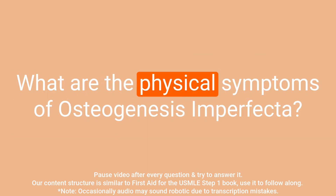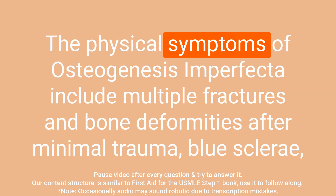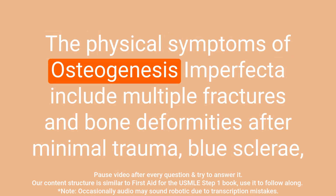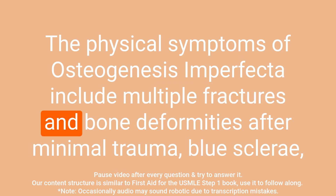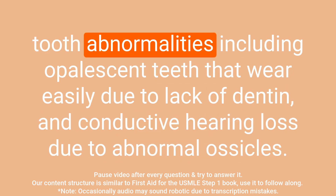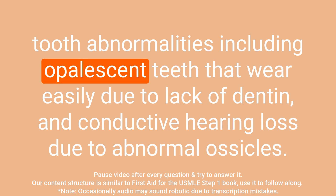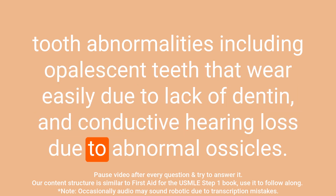Question: What are the physical symptoms of osteogenesis imperfecta? Answer: Physical symptoms include multiple fractures and bone deformities after minimal trauma, blue sclera, tooth abnormalities including opalescent teeth that wear easily due to lack of dentin, and conductive hearing loss due to abnormal ossicles.